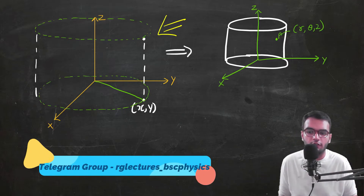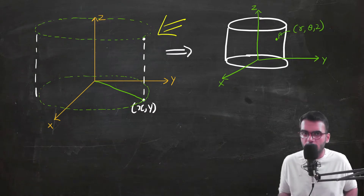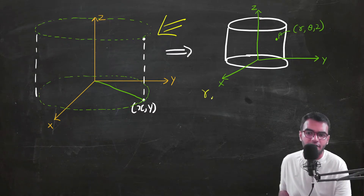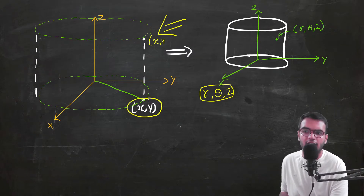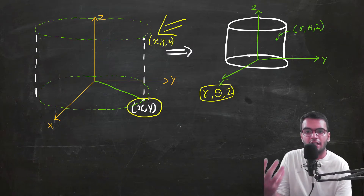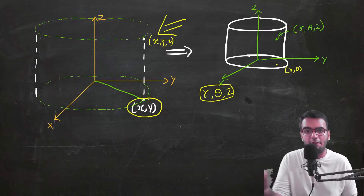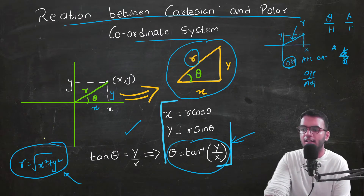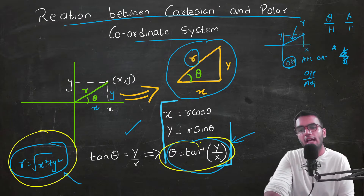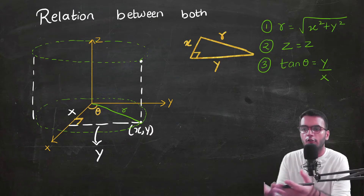We studied the Cartesian form using x, y, z and derived cylindrical coordinates r, theta, z. Just as we found relationships in the 2D structure between Cartesian and polar, in the cylindrical coordinate system we will also find the relationship between both coordinate systems.